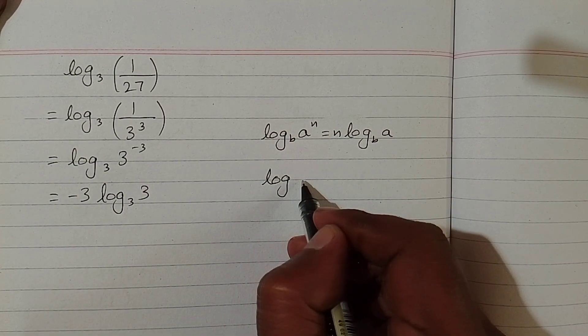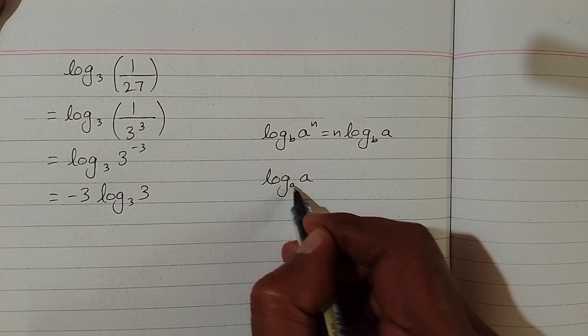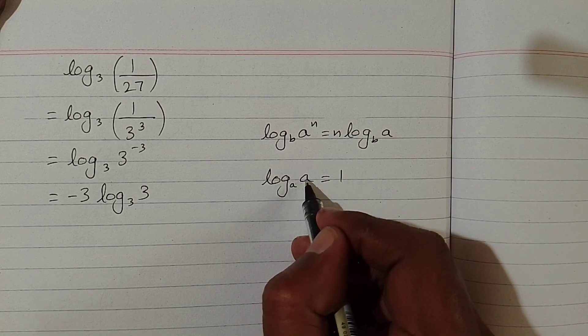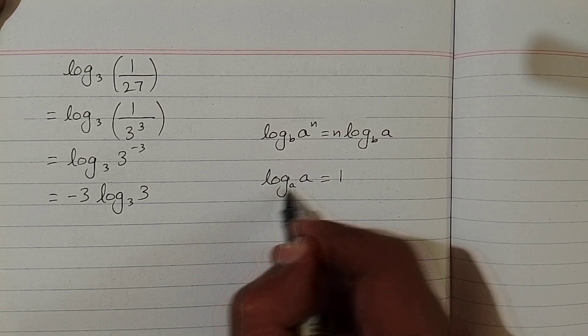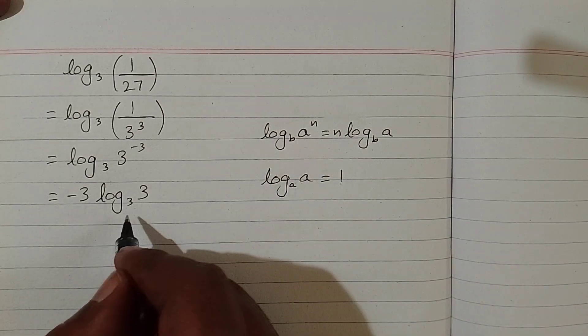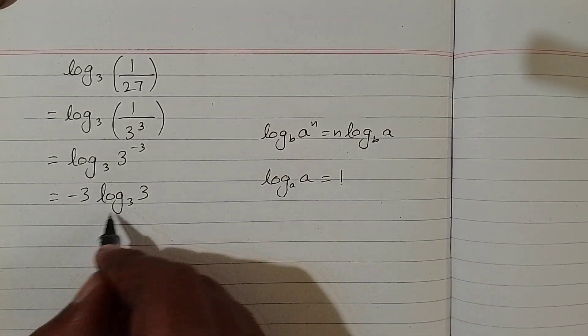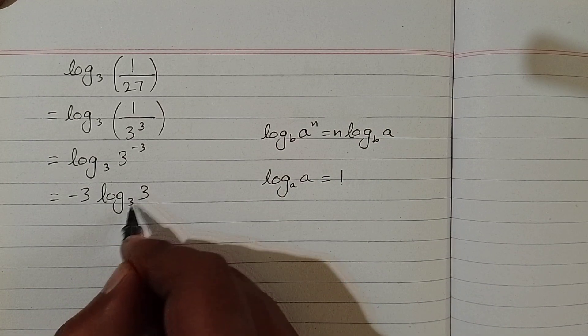Now another rule of log: log of a to the base a is equal to 1. That is, if these two numbers are the same, then the value of this log is 1. We can apply this rule here because these two numbers are also the same.